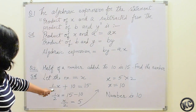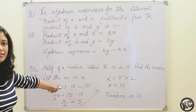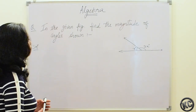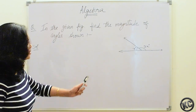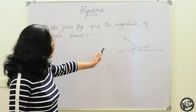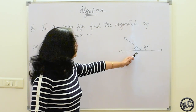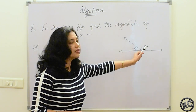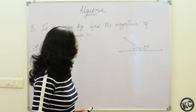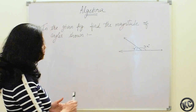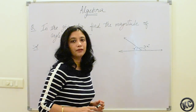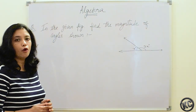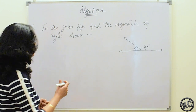Now if we put 10 into this equation it will satisfy it. Let us solve another question. In the given figure, find the magnitude of the angles shown. We have to find the magnitude of these angles, which are given in the form of variables. One angle is equal to x degrees and the other is equal to 3x degrees. We can see that this is a straight line, and these angles are formed on the straight line.